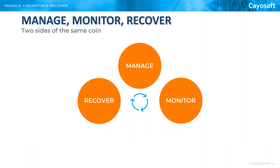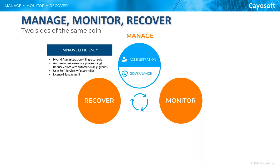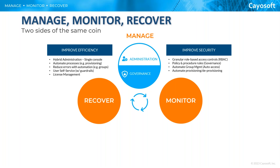To really secure and protect hybrid Active Directory, you need to manage it, monitor it for change, and prepare for recovery up front — because you can't prepare for recovery after the fact. You have three balls to juggle, and each is like a coin with two sides. With management, you have basic administration — creating user accounts, tearing them down, adding someone to a group — but you also have governance that has to be applied because your industry may be subject to legal or regulatory requirements like Sarbanes-Oxley for publicly traded companies or HIPAA for protecting patient information.